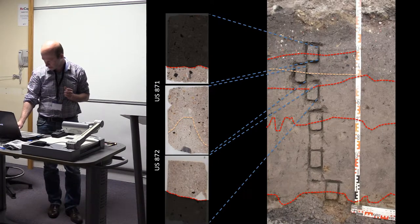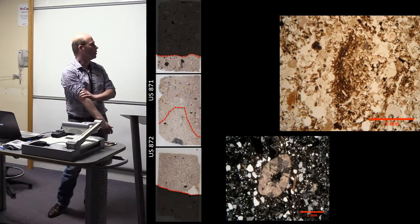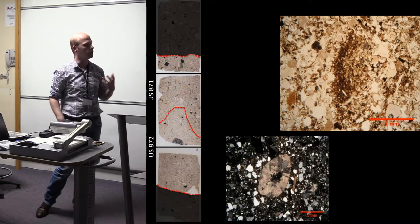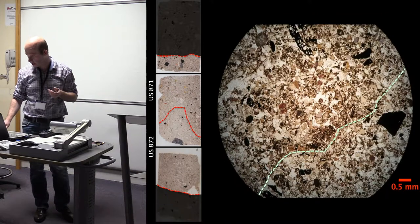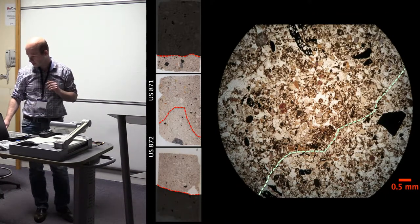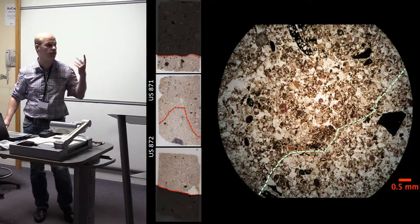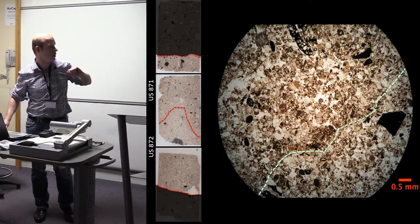When we go further up in the sequence, we start to see a real change. Basically what happens is that we still have organic material, we still have bioturbation, but we have an accumulation of much more material, as you can already see on this picture, and we still have these traces of reworking of the soil.